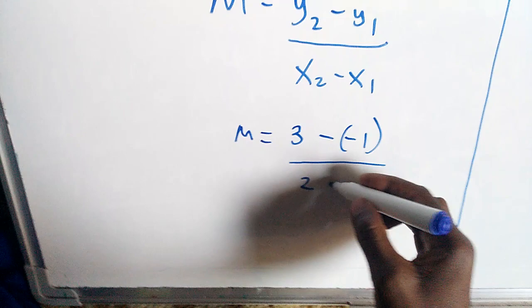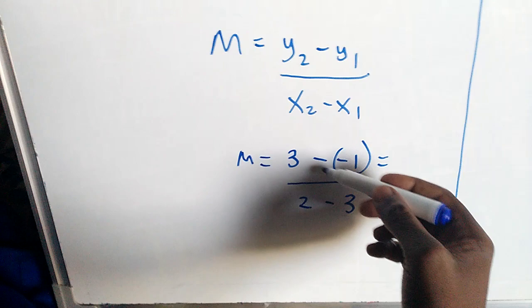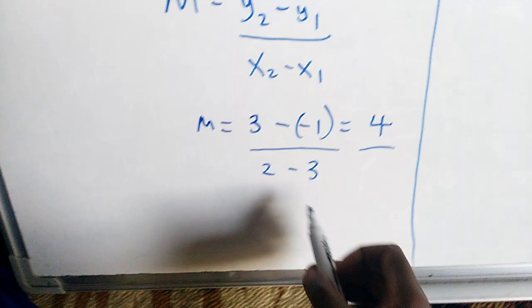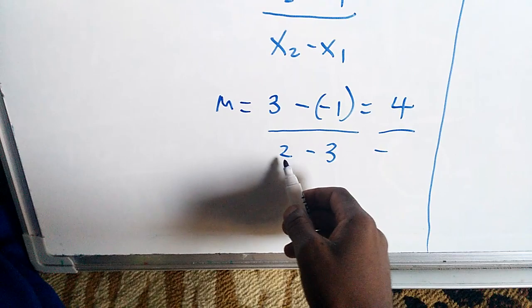Remember, negative over negative, the sign changes to plus. So it will be 3 plus 1, which is equal to 4. Small number take away big number, you have a negative. Then 3 take away 2, you have 1. Therefore, your m is negative 4.